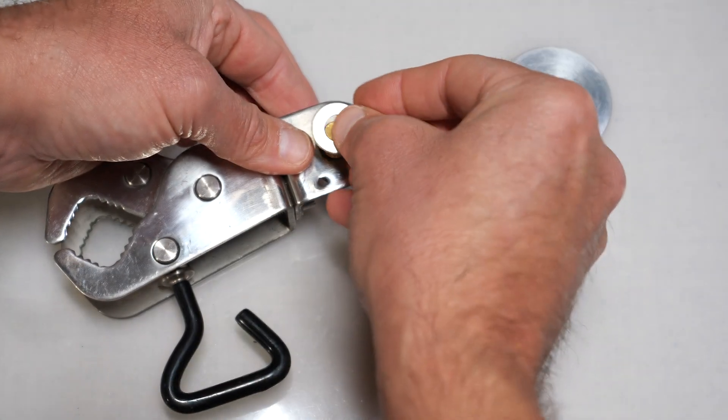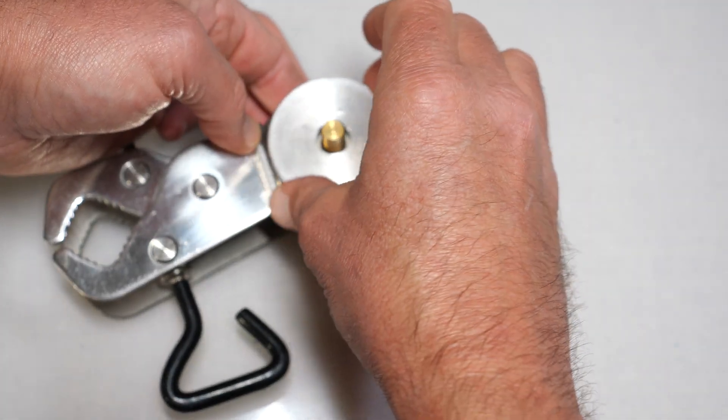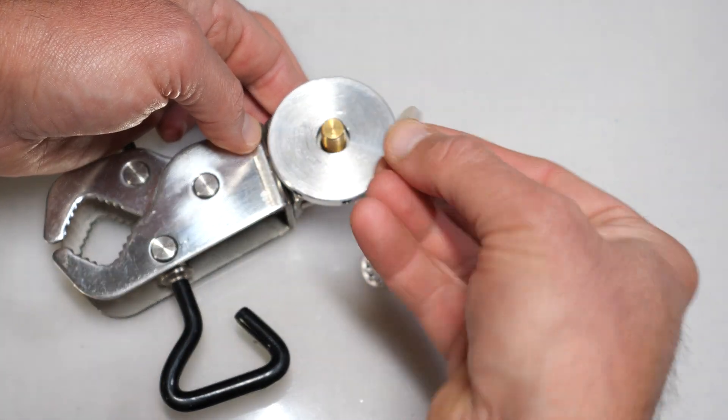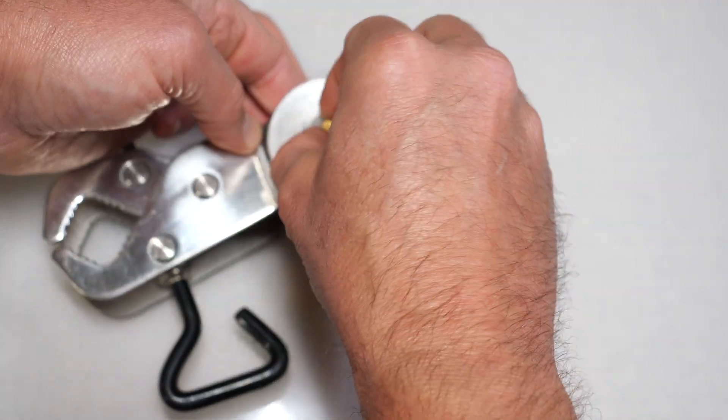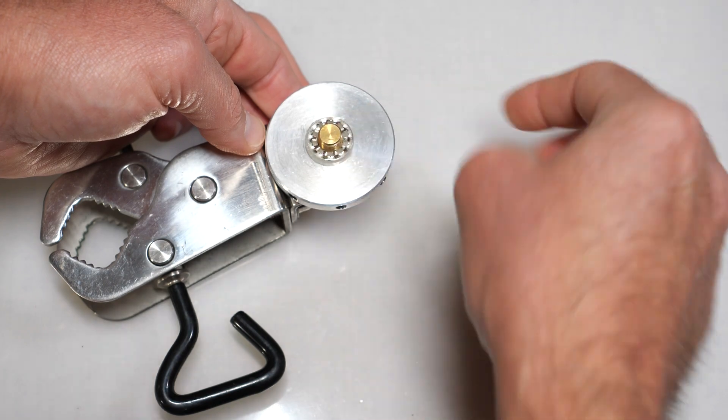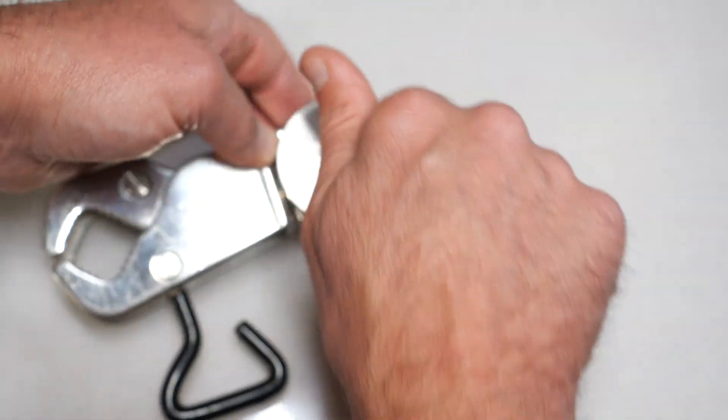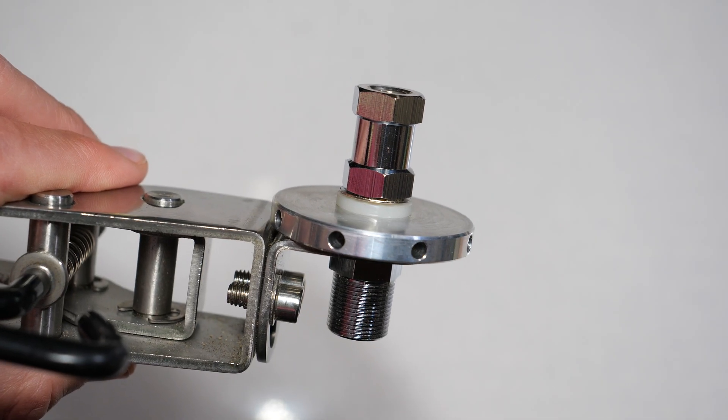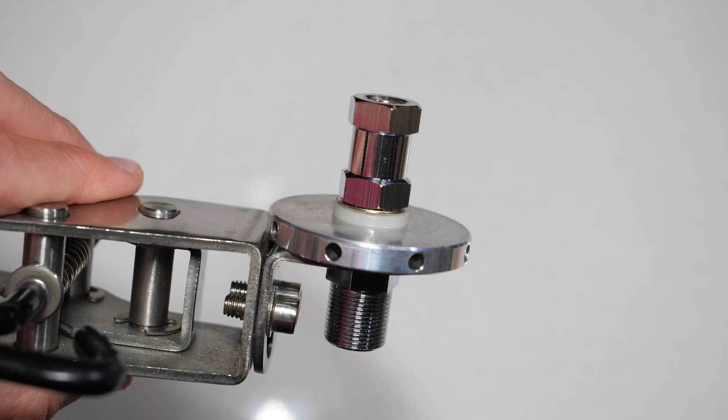When using the puck, make sure the stud portion of the antenna connection does not touch the puck unit, otherwise the antenna will short out. Refer to the technical diagram on the website to make sure there is enough clearance. For my mount, I ended up turning the puck around so that it didn't make contact.